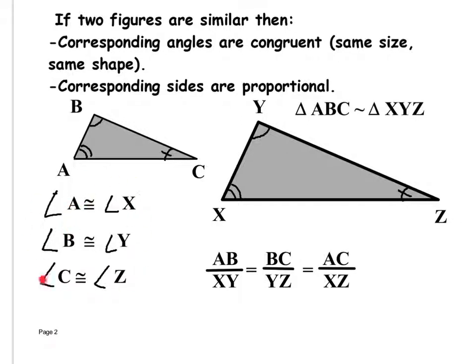You'll see this a lot in geometry. This is important because it comes into play when talking about proportional sides. Side AB — named from angle A to angle B — is proportional to side XY. You know which sides correspond by looking at the angles and matching tick marks. Side BC goes with side YZ, and side AC goes with side XZ. Knowing which sides are corresponding is going to be important for solving your homework.